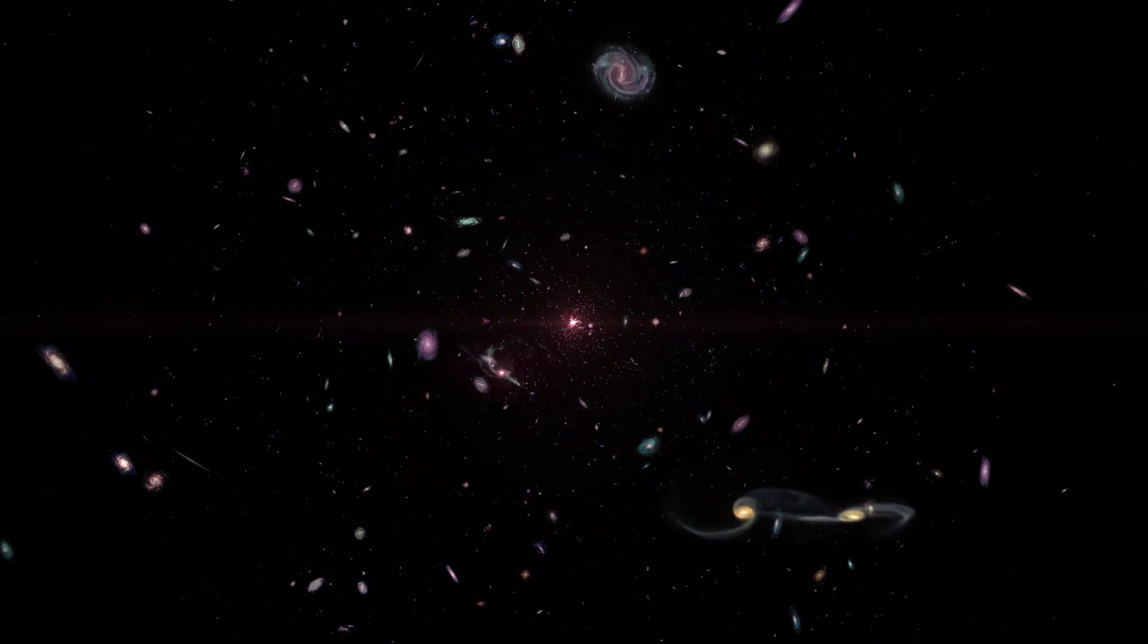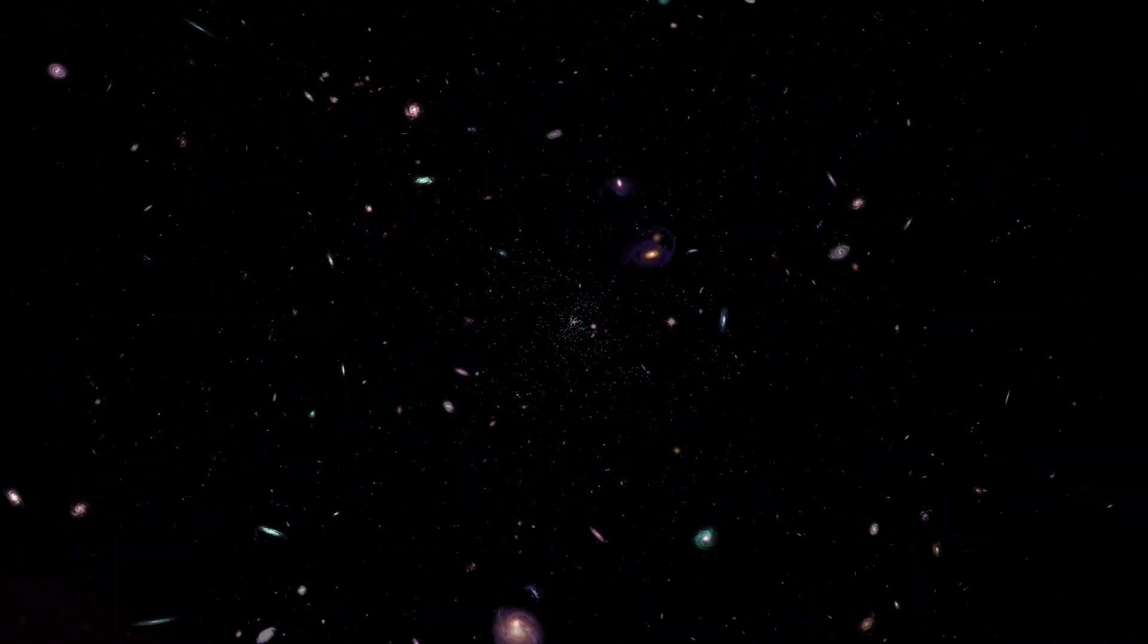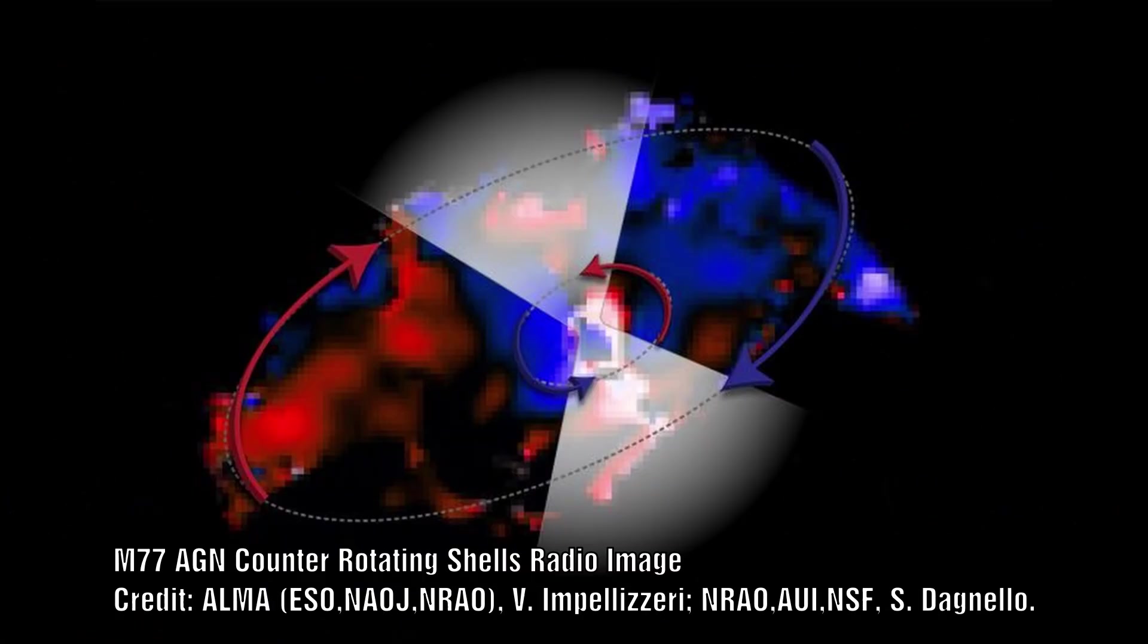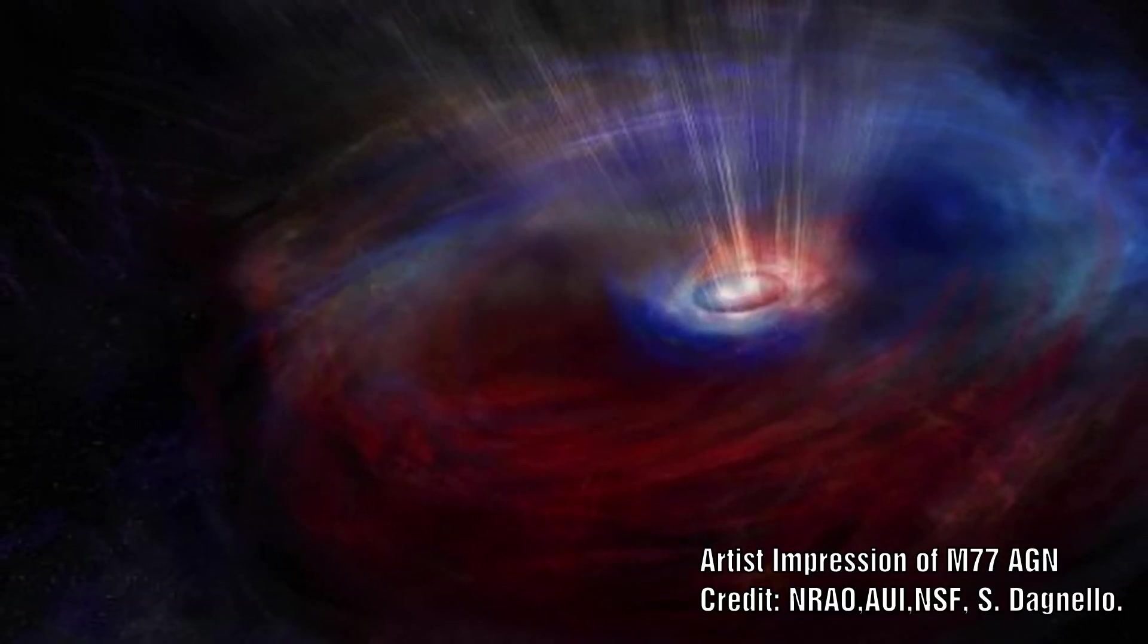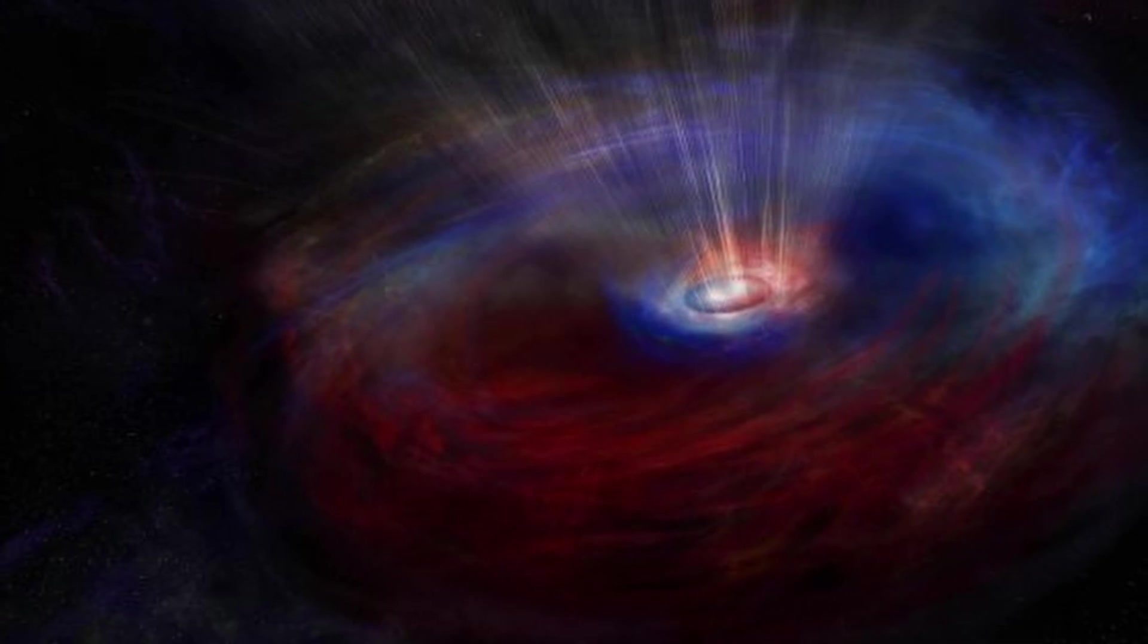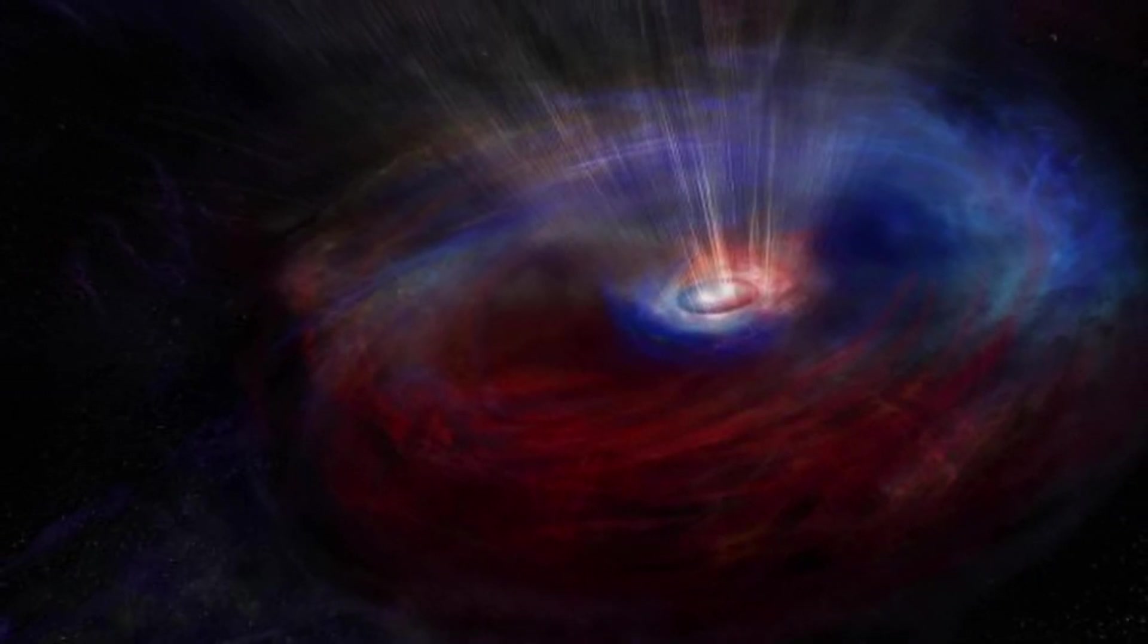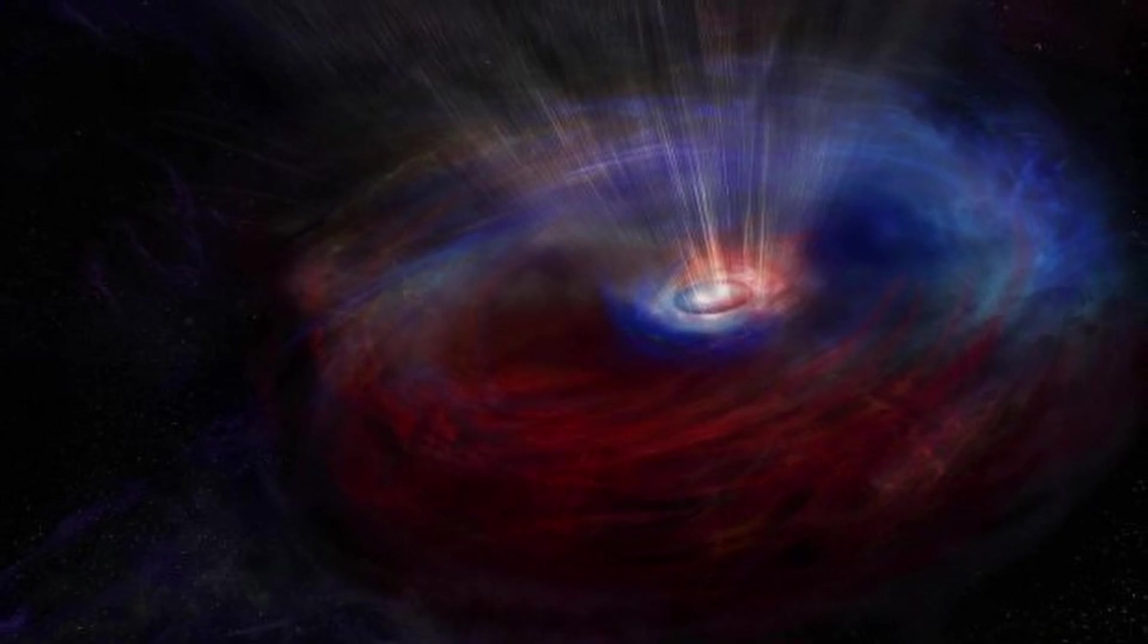They now believe that having these counter-rotating rings would mean that this accumulation process would occur much quicker, as the counter-rotating gas streams are unstable, which would mean that the clouds fall into the black hole faster than they would do in an accretion disk with a single rotating direction.